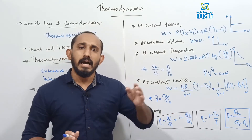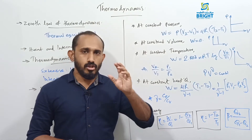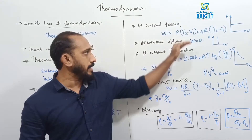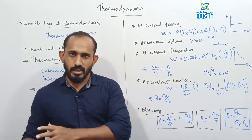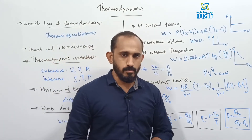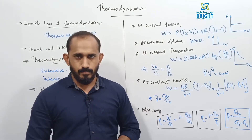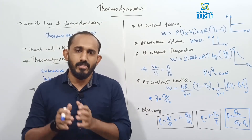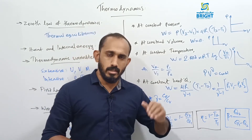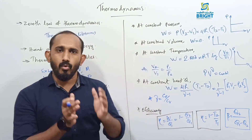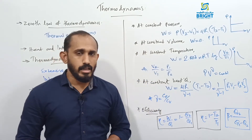We have four types of thermodynamic processes where thermodynamic variables change and we get some useful work. In an isochoric process, work done is zero; in the remaining processes we get useful work. This concept is implemented in heat engines: a heat engine absorbs heat from a source, does useful work, and gives the remaining heat to the sink. The source, working substance, and sink form the concept of a heat engine.